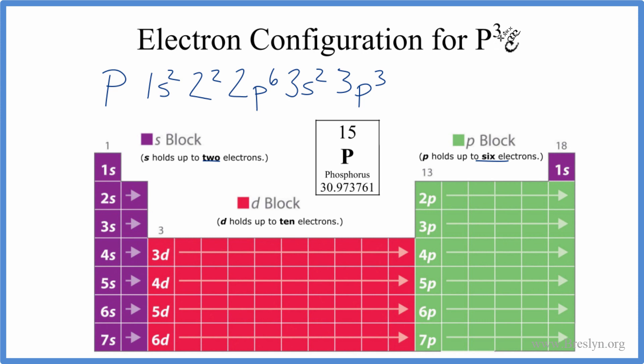But we wanted the phosphide ion. When we have an ion that has a negative charge, that negative means that it gained electrons. So if you gain an electron, you've gained a negative charge. In this case, we have a 3 in front of the negative. So we've gained three electrons.